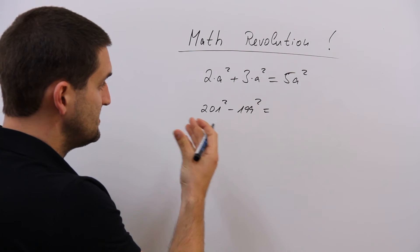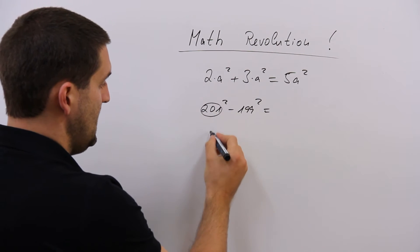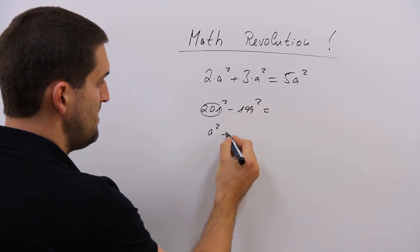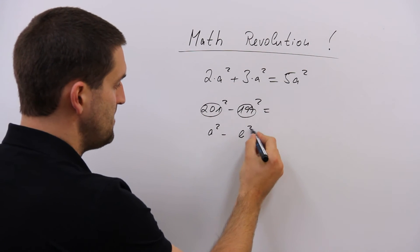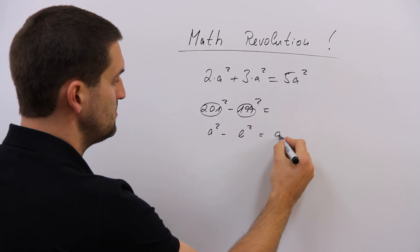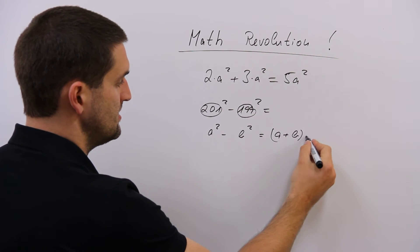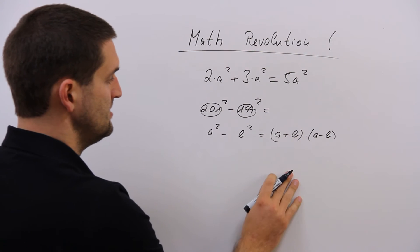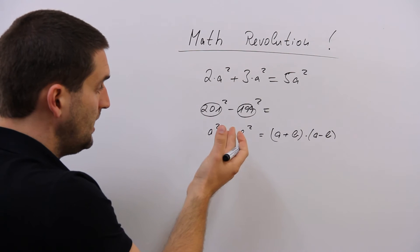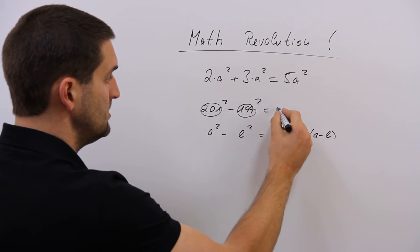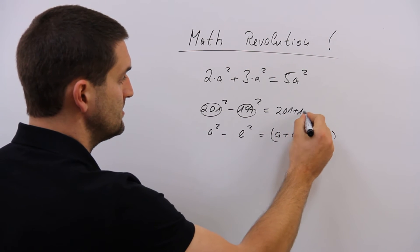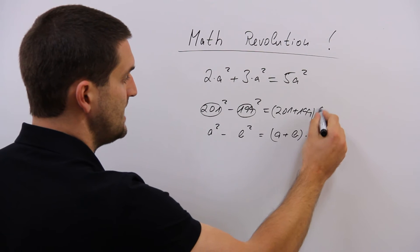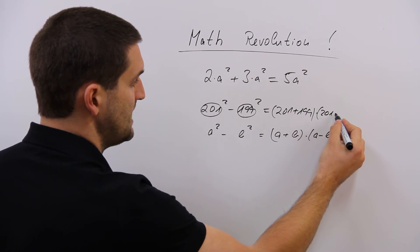If you see the structure, it's a to the power 2 minus b to the power 2 is equal to a plus b times a minus b. So how can we write it down now? 201 plus 199 times, same here, minus.